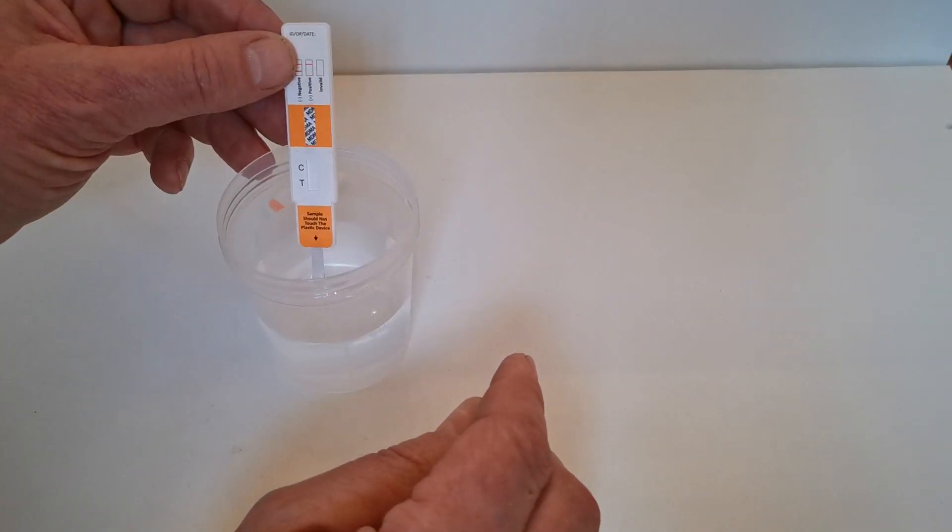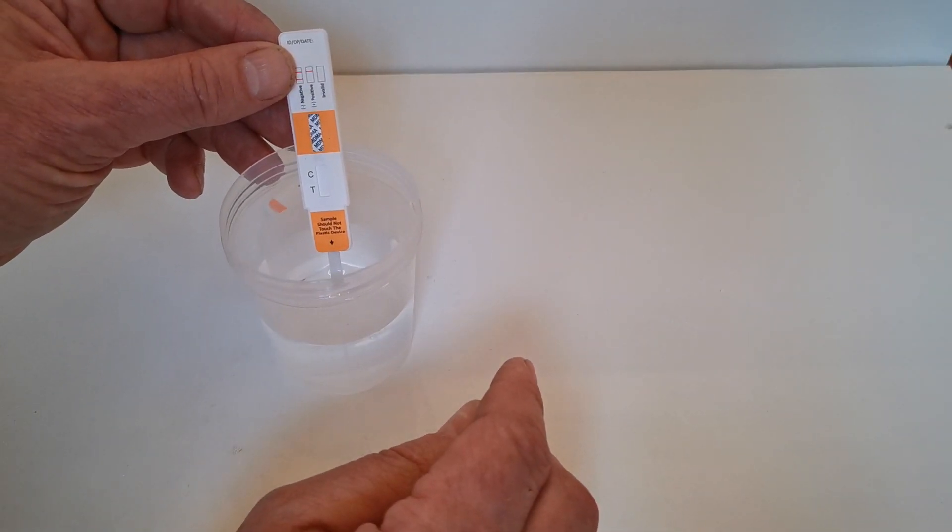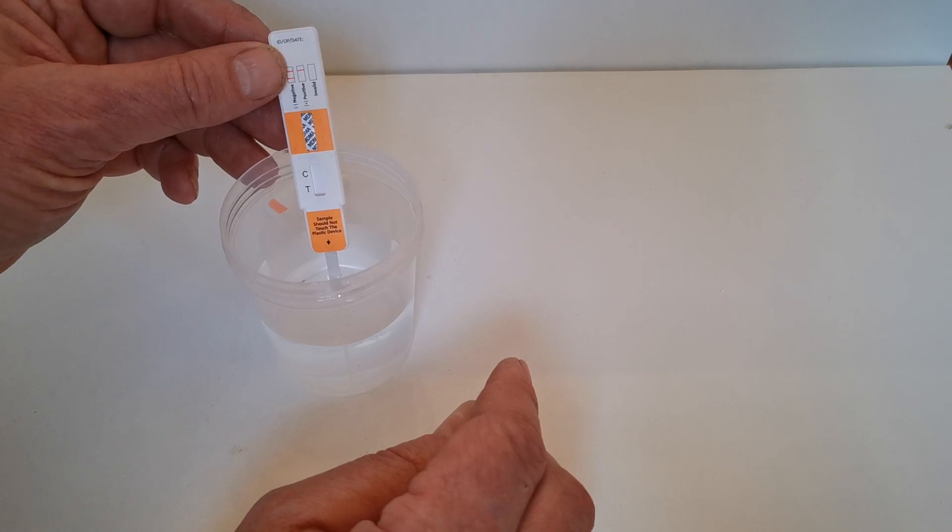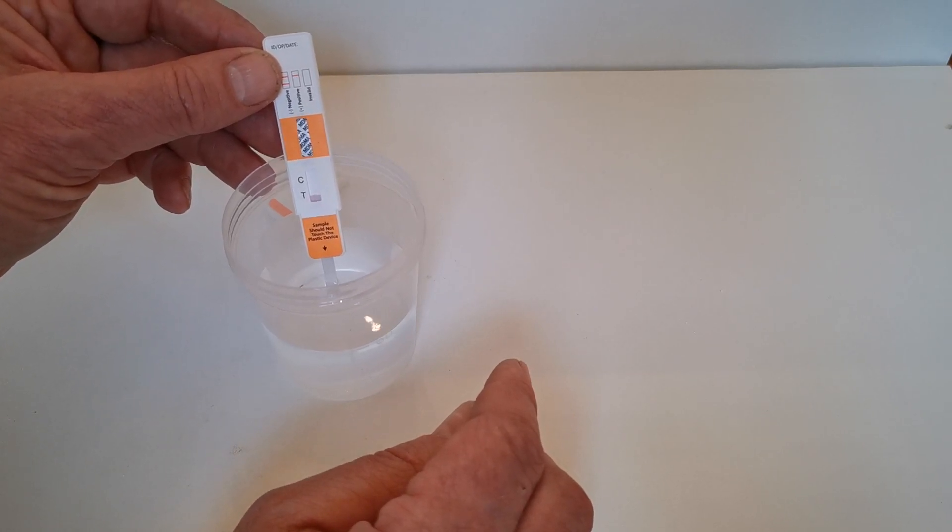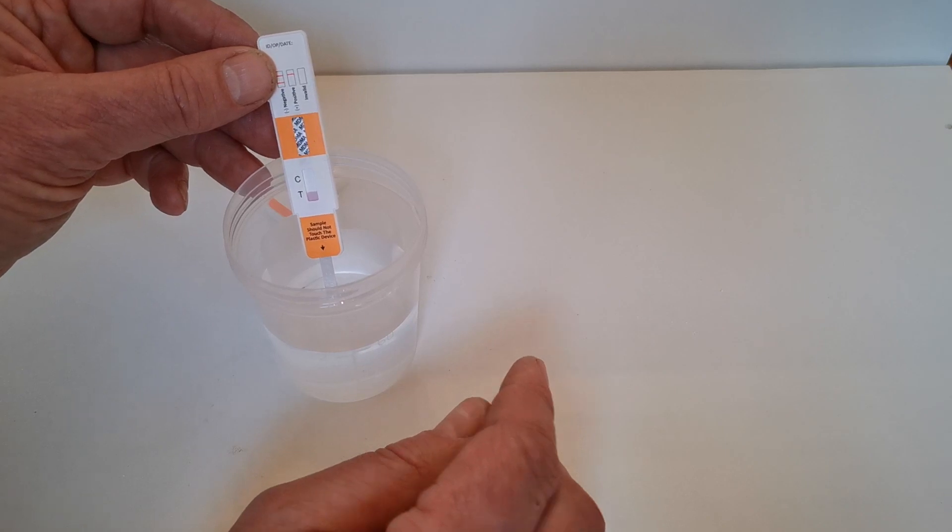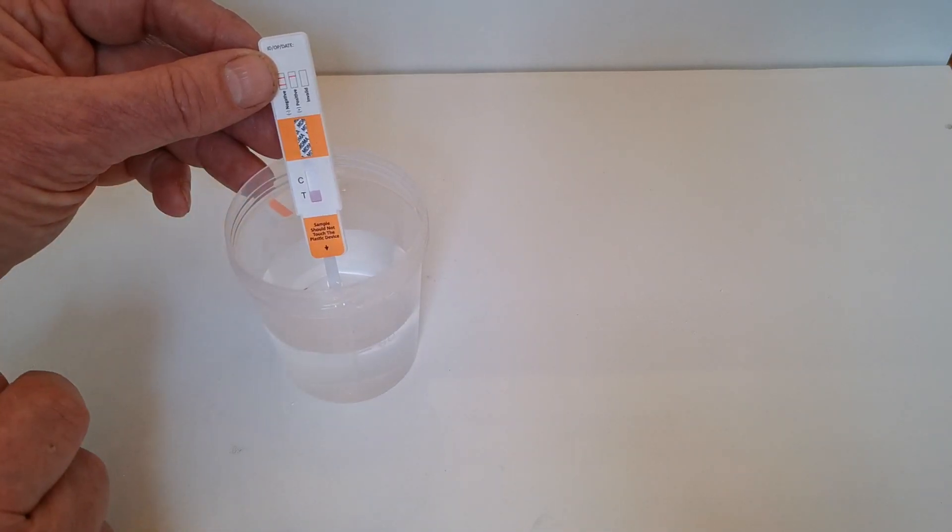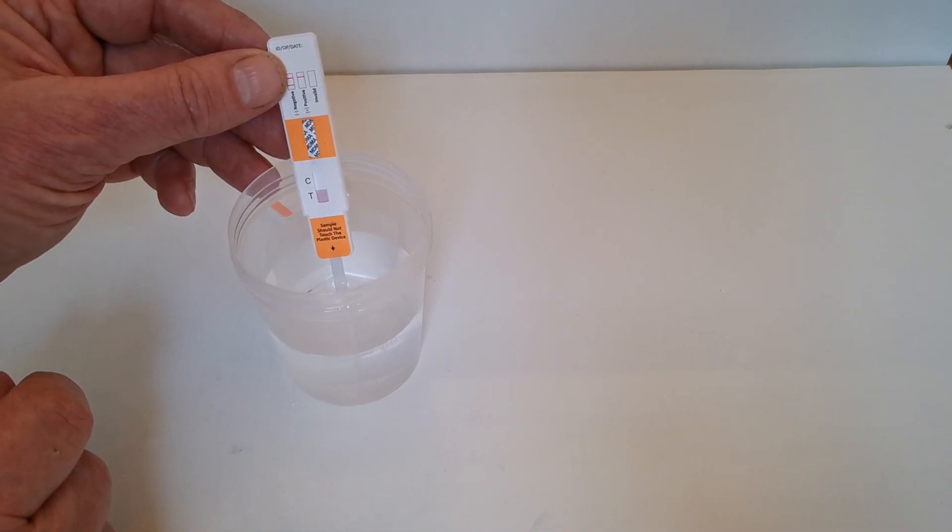Just dip it to below the level of the panel itself. It gives an indicator on that test and you need to leave it in the liquid if you're going to dip it for probably between five to ten seconds. And you can see that pink dye starting to run up in the results window here, indicating that it's absorbing that fluid.